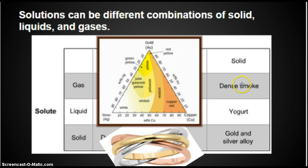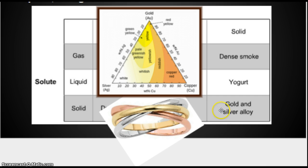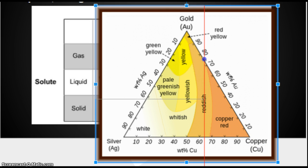You can also have a gas dissolved in a solid — that would be really dense smoke. A liquid dissolved in a solid would be yogurt. And a solid dissolved in a solid — for example, a gold and silver alloy. Yellow gold is pure gold. If you add silver to it, you have what's called white gold. If you add copper, you have what's called rose gold. Different combinations of gold and silver, or gold and copper, or silver and copper give you the different colors you see in jewelry.